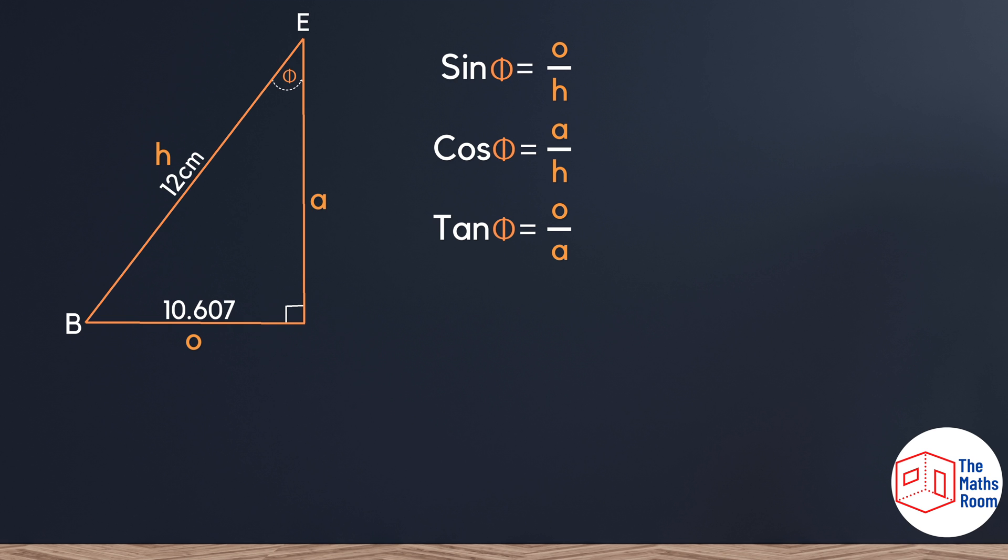Now that the triangle is labeled, we can look at which formula to use. We've been given the opposite and the hypotenuse. I'm interested in the angle theta, which narrows it down to sine, cos, or tan. But sine is the only formula that has both of these two pieces, so we'll proceed with the formula involving sine.